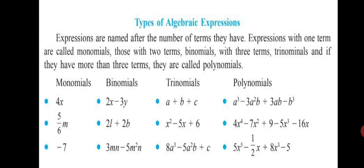And more than three, see the last one, polynomials. Polynomials means you have more than either 4 or more than 4. So, a cube minus 3a square b plus 3ab minus b cube. There are four terms. So, it is polynomial.